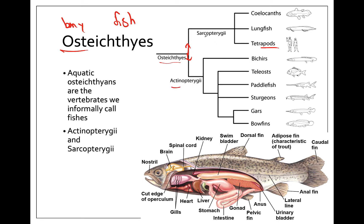The two clades are the Actinopterygii and the Sarcopterygii. 'Actino' means ray, 'pterygii' means arm or fin — so these are the ray-finned fishes, what you probably think of when you picture a fish. Then Sarcopterygii — 'sarco' means lobe or muscle — so these are the lobe-finned fishes, which includes three main groups: the coelacanths, the lungfish, and the tetrapods.